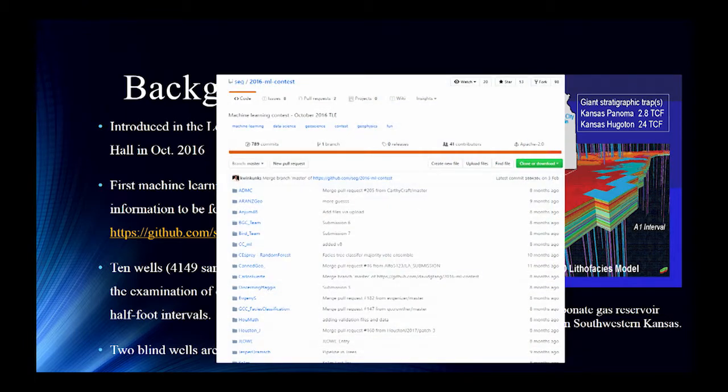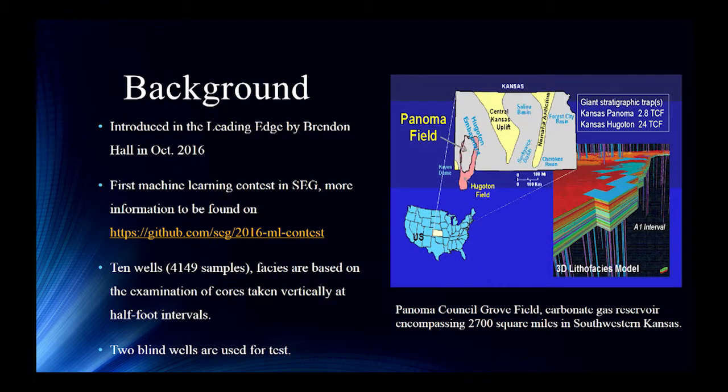If you like more information, you can check this GitHub. It was hosted on the GitHub. This is a capture of this page. So there were 40 teams participating in this contest. They are all from the world. Some people from France, some people from another place. It's a good event where people share the code and communicate. And the training data is from Panoma Council Groove Field, which is a carbonate gas reservoir with 2,700 square miles in the southwestern Kansas. And it consists of 10 wells with more than 4,000 samples.